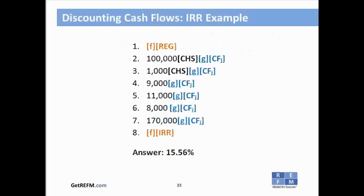For calculating the IRR using the same cash flows: clear the financial registers, enter the investment amount at time zero, enter the subsequent cash flows the same way, and finally press F and then the IRR key to compute the internal rate of return.